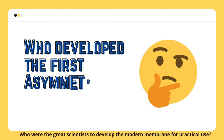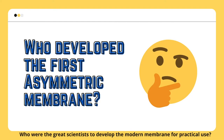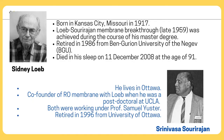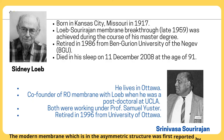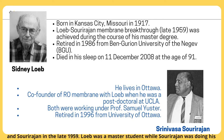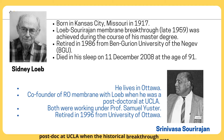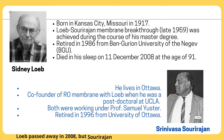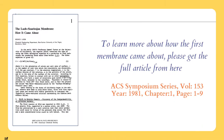So, who were the great scientists to develop the modern membrane for practical use? The modern membrane, which is in the asymmetric structure, was first reported by Loeb and Sourirajan in the late 1959. Loeb was a master's student, while Sourirajan was doing his post-doctoral at UCLA when the historical breakthrough was made. Loeb passed away in 2008, but Sourirajan is still alive and currently living in Ottawa, Canada.